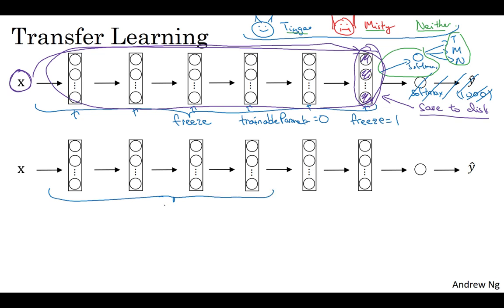So maybe you freeze just these layers and then train these later layers. Although if the output layer has different classes, then you need to have your own output unit anyway: Tigger, Misty, or neither.